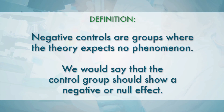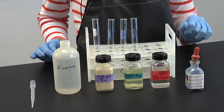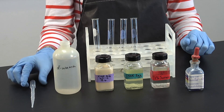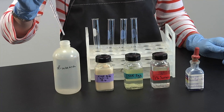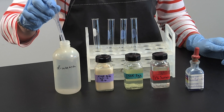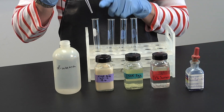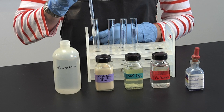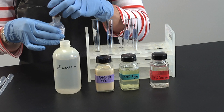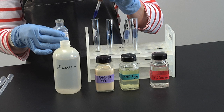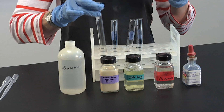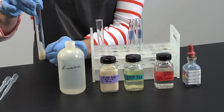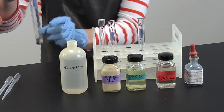Let's begin our experiment. I will first label my test tubes with a wax pencil, then add three milliliters of each substance starting with DI water. We will now add five drops of the biuret reagent to each test tube and swirl to mix. Biuret is blue in color alone. If the mixture remains blue, this indicates a negative test for protein. If the mixture turns purple or pinkish purple, this indicates a positive result and the presence of protein.